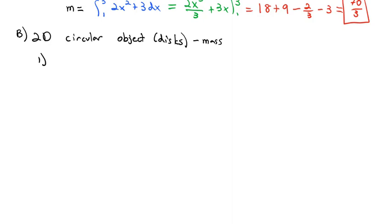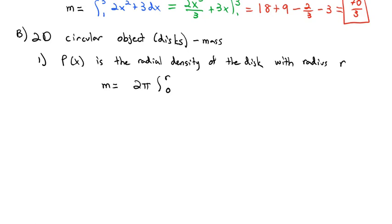Similarly, we've got a function where ρ(x) is the radial density of the disk with radius r. Then the mass equation is 2π (it's a disk so you have to see π in there) times the integral from 0 to r. Because we're in two dimensions, we have to account for x and the x distance that we are away from the axes, times the density function dx.